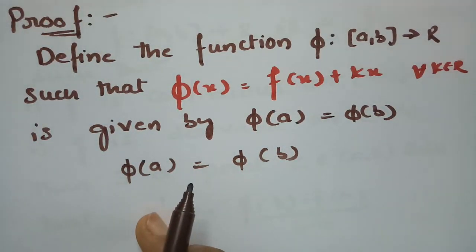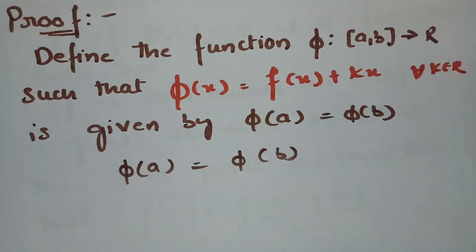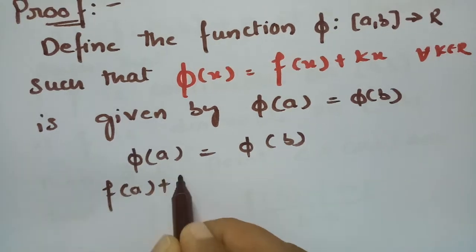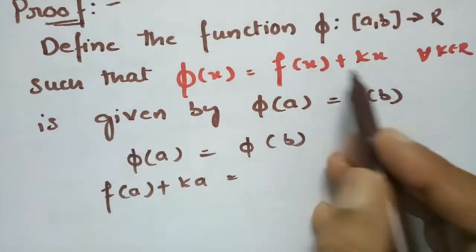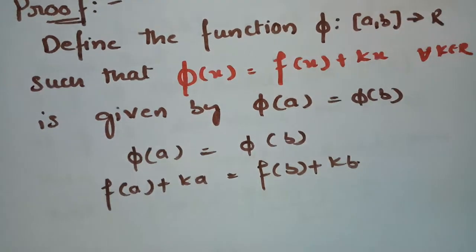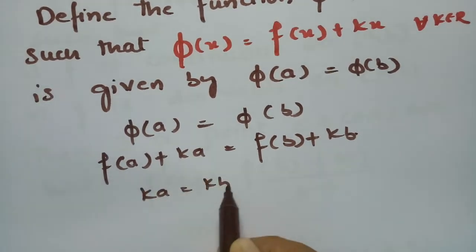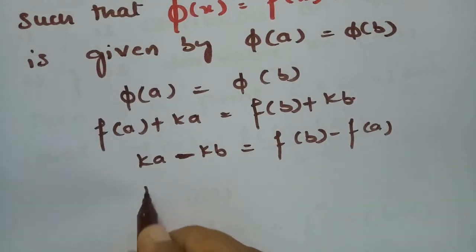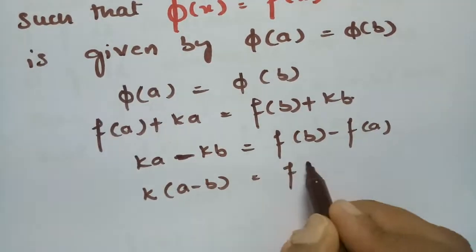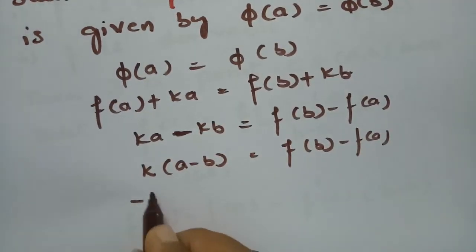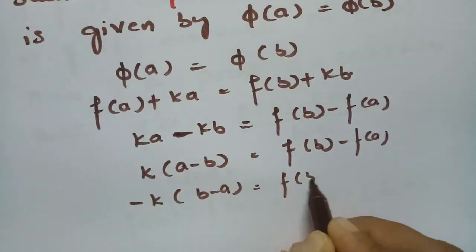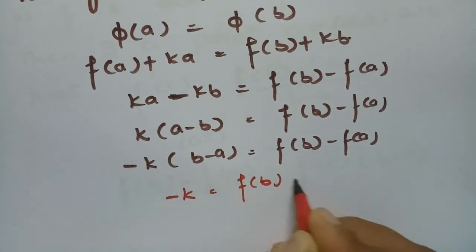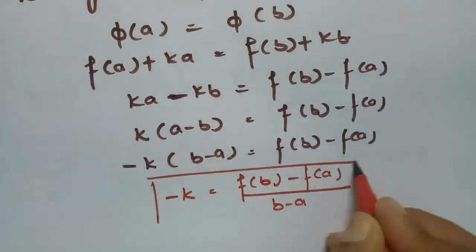What is φ(a)? Substituting x = a into φ(x), we get f(a) + ka. Setting this equal to φ(b) = f(b) + kb, we get f(a) + ka = f(b) + kb, which gives ka − kb = f(b) − f(a), so k(a − b) = f(b) − f(a). Taking minus common: −k(b − a) = f(b) − f(a), therefore −k = [f(b) − f(a)] / (b − a). We must remember this value.